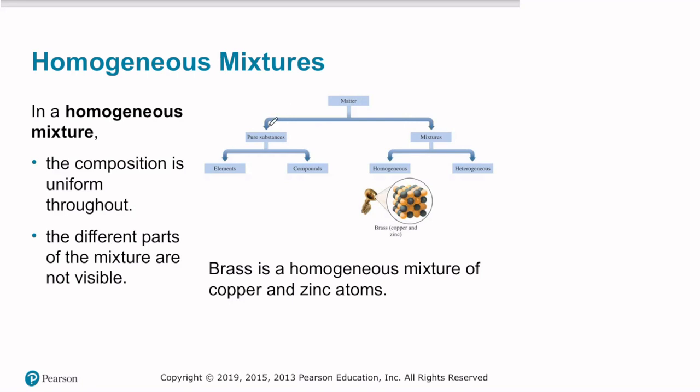Previously we categorized pure substances into elements and compounds. Now we'll categorize mixtures into homogeneous and heterogeneous. In a homogeneous mixture, the composition is uniform throughout. The different parts of the mixture are not visible. Here's an example of a homogeneous mixture: this is a solid mixture, brass, which is copper and zinc. It's an alloy, a metal alloy which has copper and zinc. Those are not chemically combined, and therefore it's a mixture. Another homogeneous mixture would be milk. Milk is a homogeneous mixture. It isn't a pure substance, but it can't be easily separated with methods like filtration.